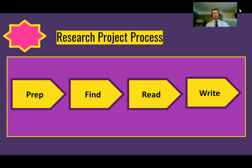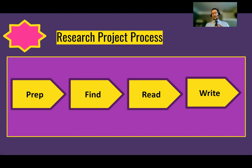Getting ready to do research — it's very important to understand the research project process. There are four main things you do when doing a research project: first you prepare, then you find some sources, then you read them, and then you write something based on those sources. That's the most simple model of the research process. Each of these stages has different things that go on. The library can certainly help you as you're trying to understand a source or find a better source.